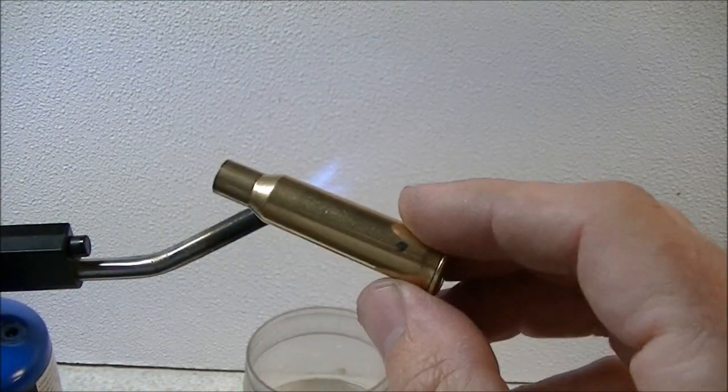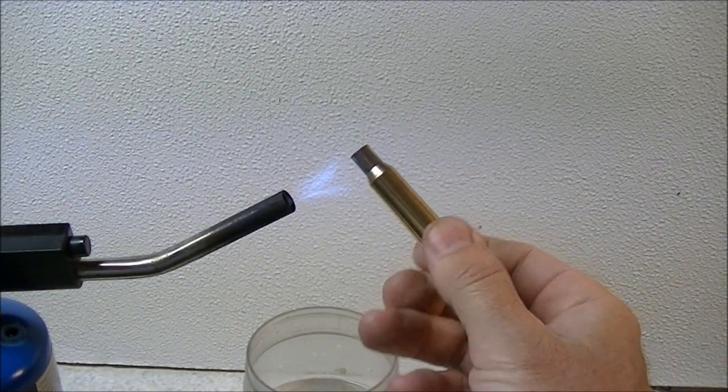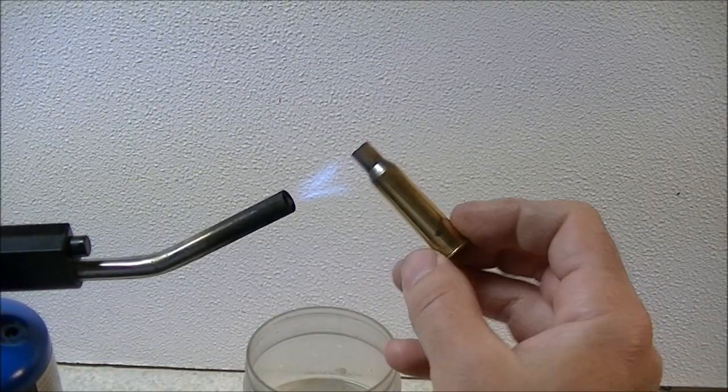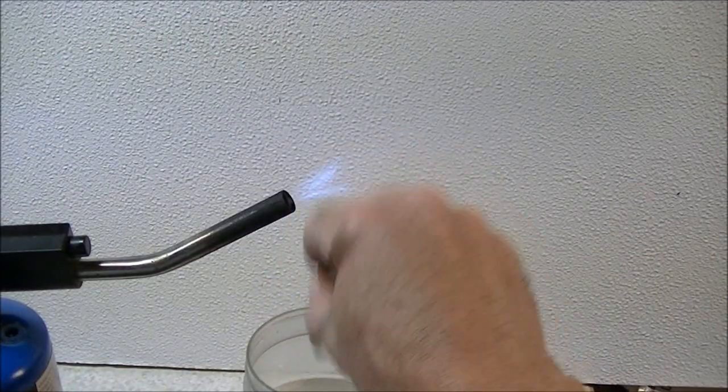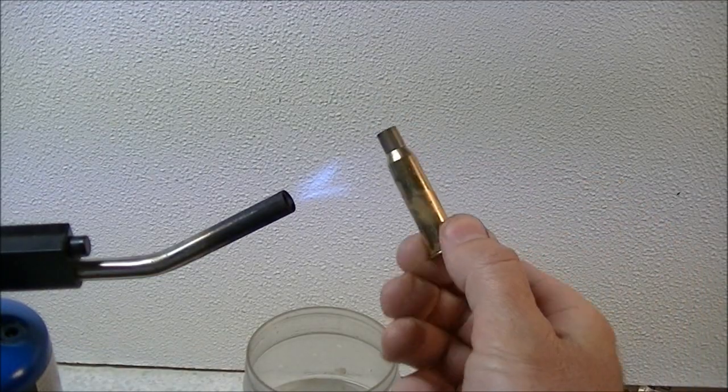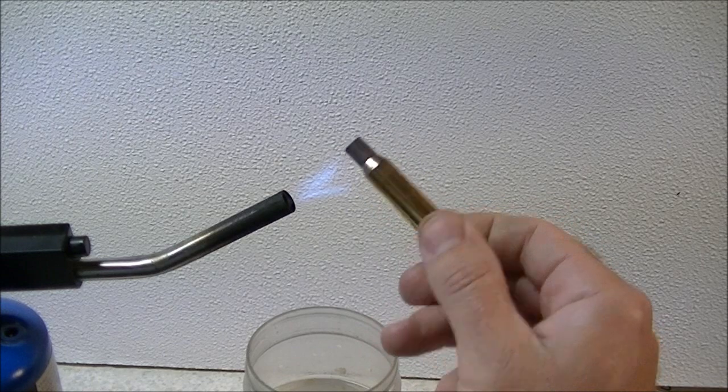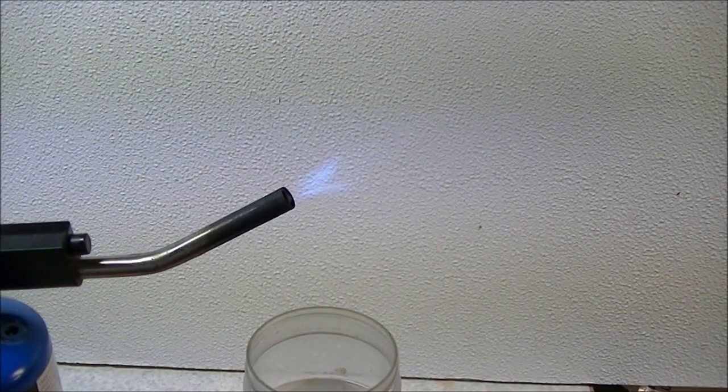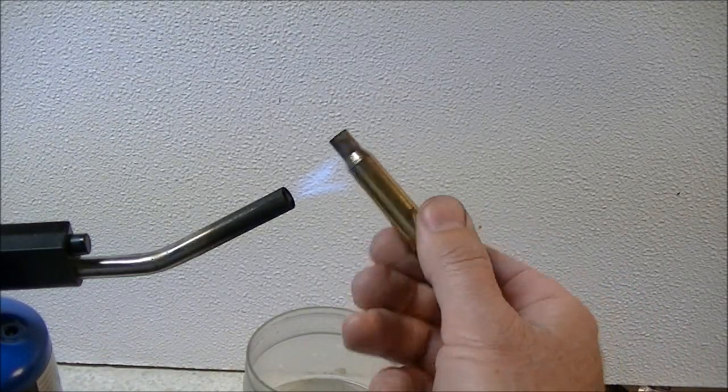Basically just grasp the cartridge case with your fingers and hold the neck in the flame, rotating it around. You can start to see the color change, and before the cartridge gets too hot to hold onto, drop it in the water. Simply repeat that with all your cartridge cases. Assuming you've got reasonably good feeling in your fingers, you will not let the cartridge case get too hot to hold. You can either drop the case completely in the water or just dunk the neck of it in the water like I do.